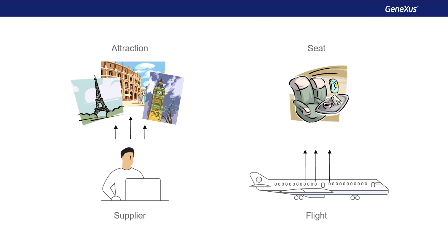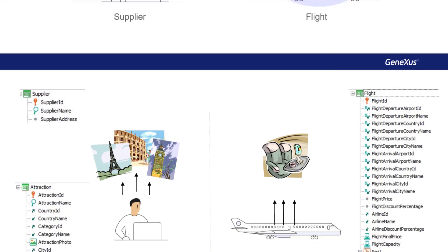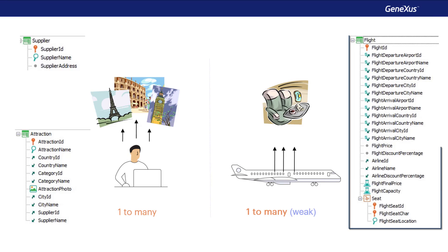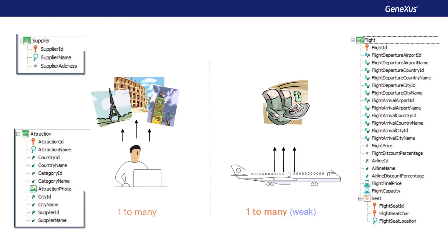An entity such as Seats, which only makes sense if it's represented in relation to another entity — in this case, Flights — is called a Weak Entity. This type of Weak 1-to-many relationship is usually represented with a single, two-level transaction, where the Weak Entity is in the second level. It's different from the 1-to-many relationship of Suppliers and Attractions, where we created two transactions and set as Foreign Key the primary key of the other.